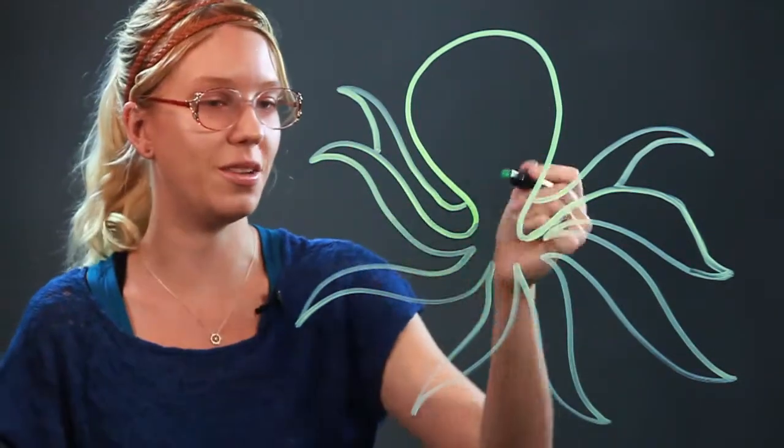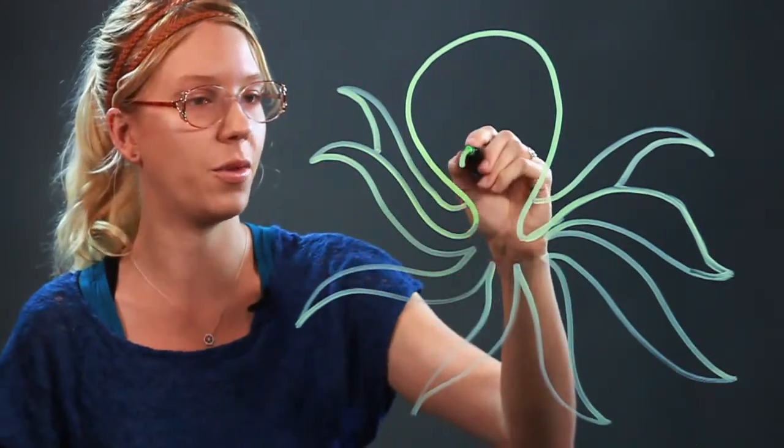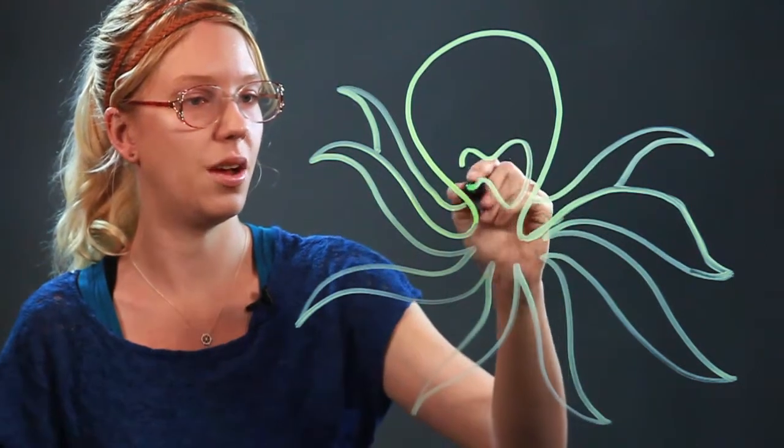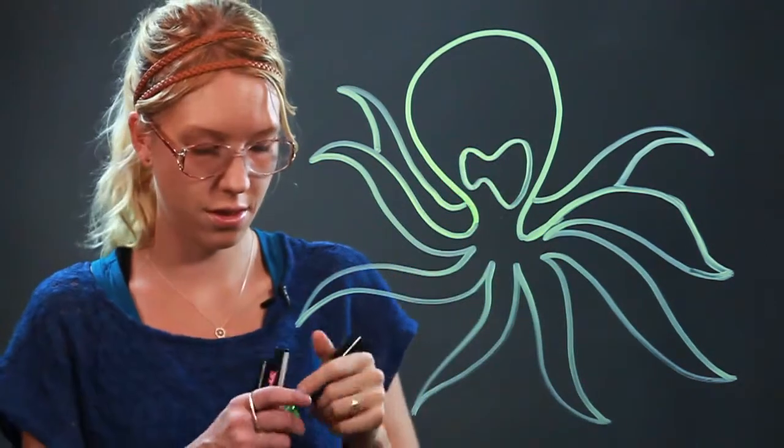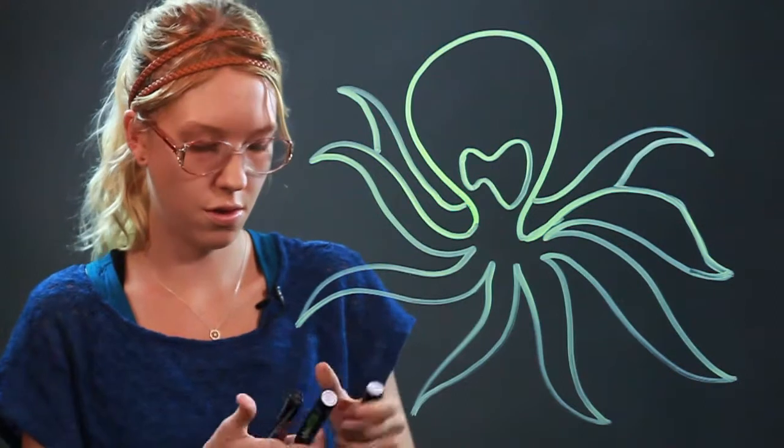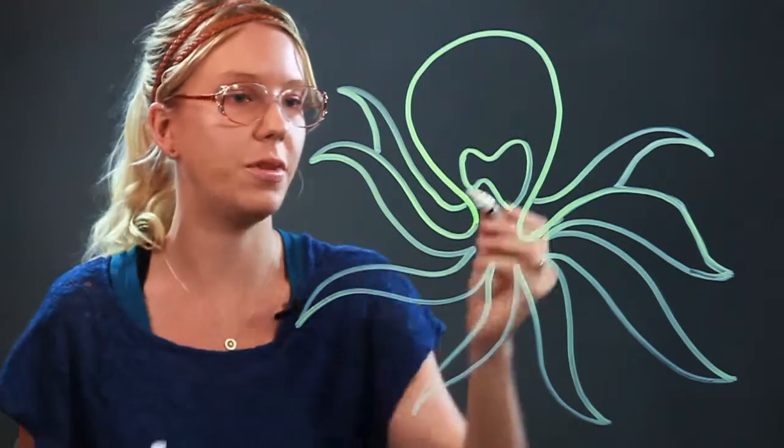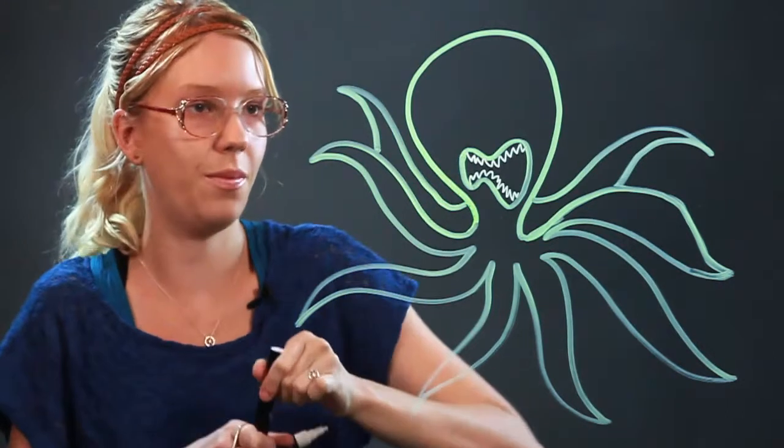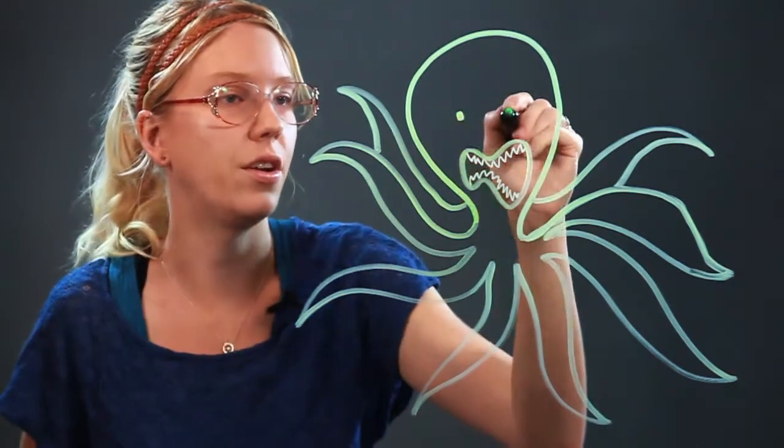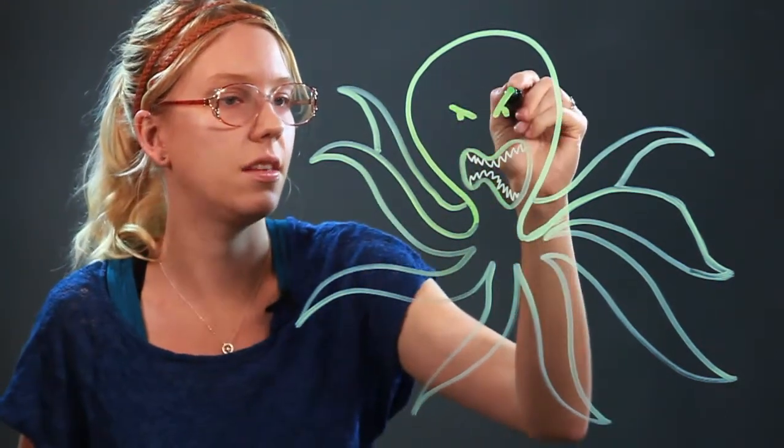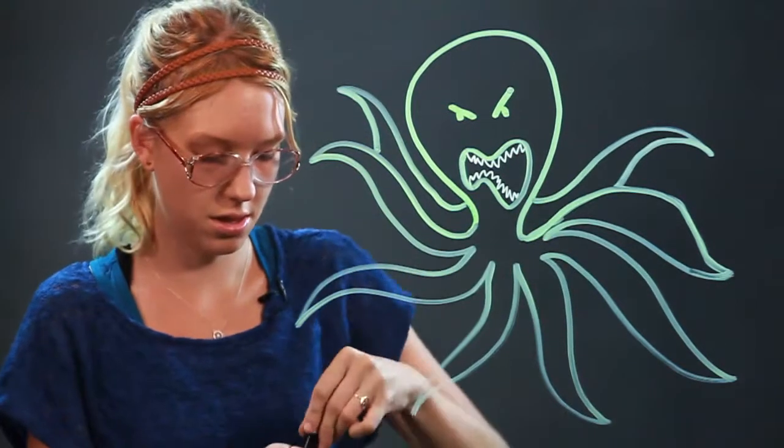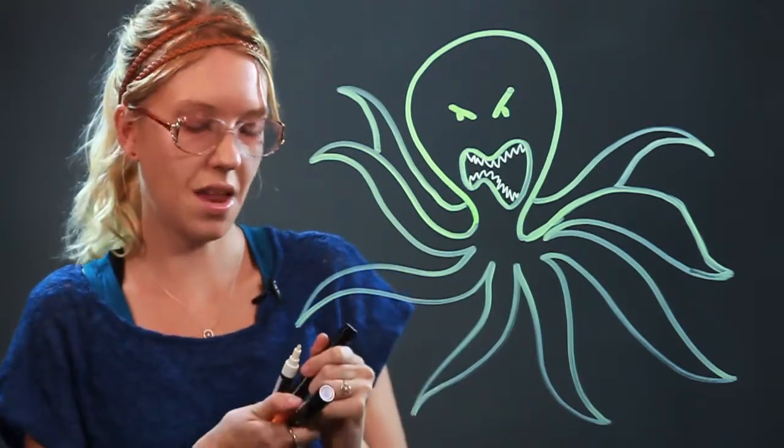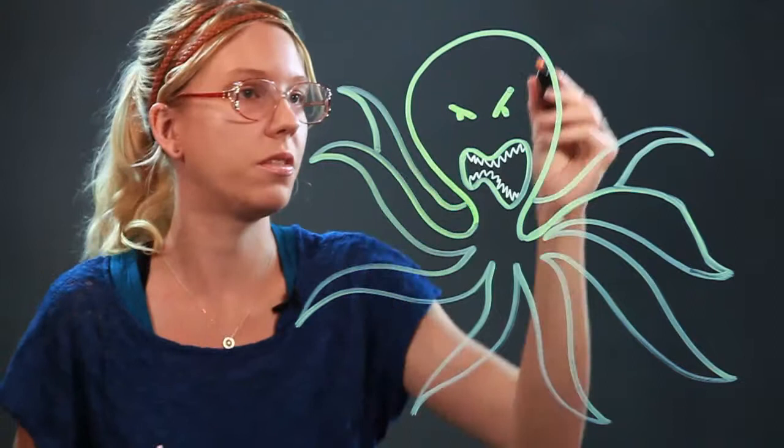Now this is a monster so we need to make him kind of scary. So I'm going to give him a big mouth full of sharp little teeth and let's give him some angry beady eyes. And hey, he's a monster. I'm going to give him some horns.